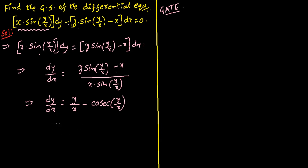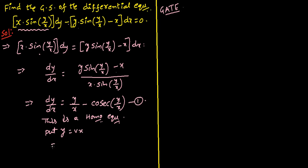We clearly observe that this is a homogeneous equation. That is why we substitute y equal to vx in this equation, where v is a dependent variable, not a constant. So dy/dx, by the product rule of differentiation, becomes v plus x times dv/dx.